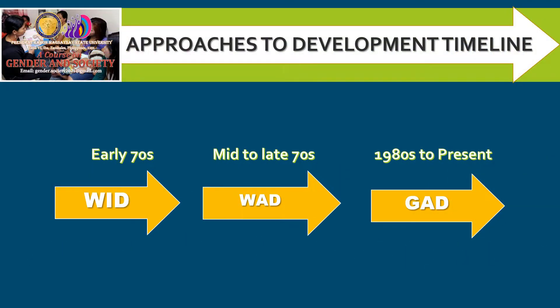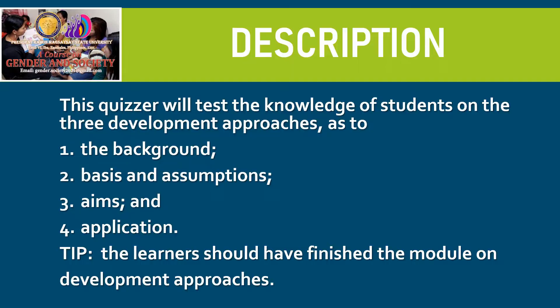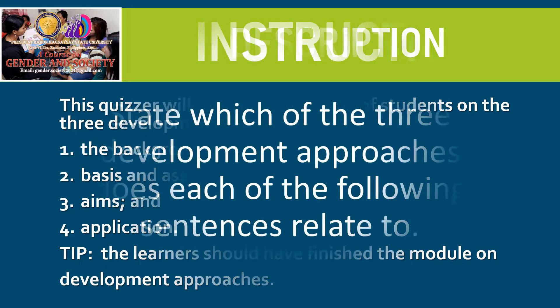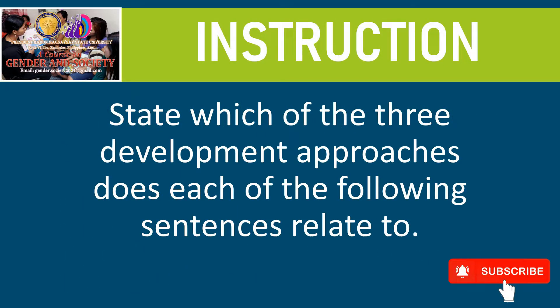This quiz is focused on the three development approaches which were adopted since the 1970s, namely the Women in Development (WID) approach, the Women and Development (WAD) approach, and the Gender and Development (GAD) approach. Instruction: State which of the three development approaches each of the following sentences relates to.